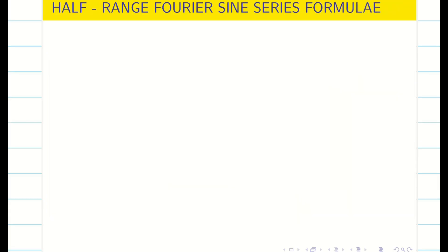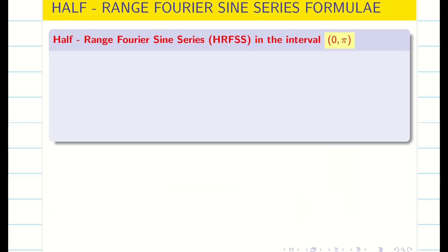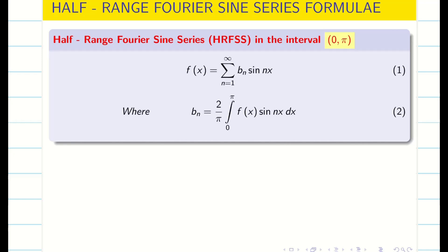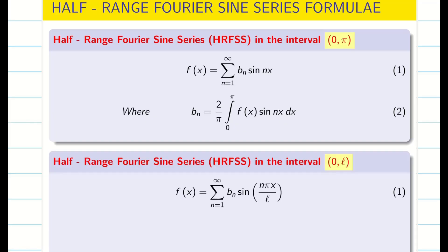Similarly, for the half-range Fourier sine series, only the bₙ term exists; a₀ and aₙ will become zero. So we write the formula as bₙ = (2/π) integral from 0 to π of f(x) sin(nx) dx. In the same way, we can write the corresponding formula for the interval (0, L).